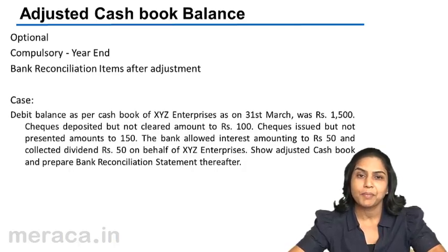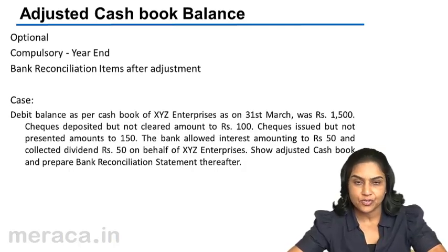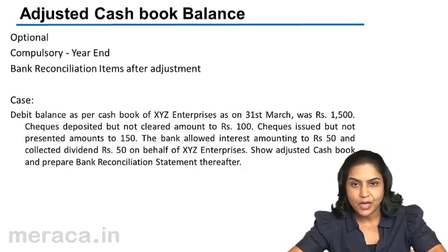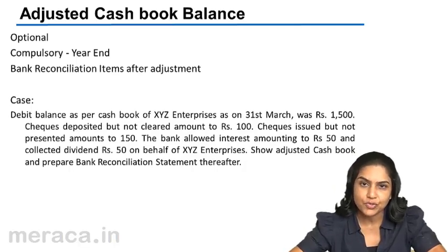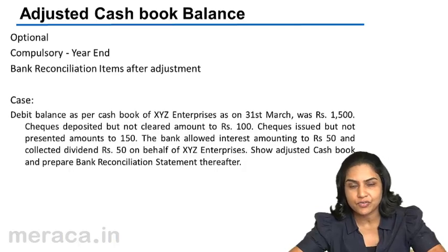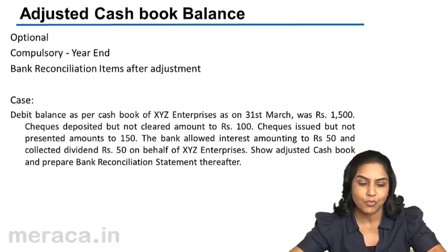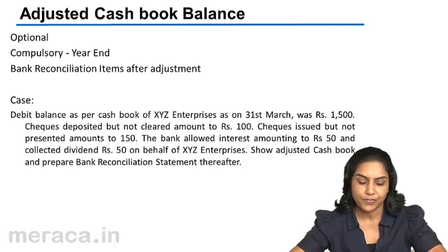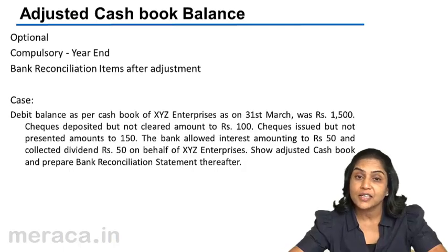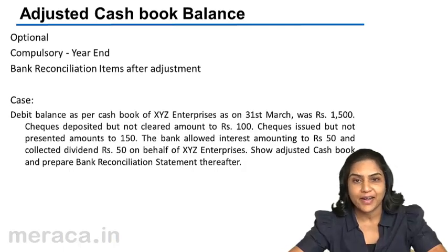What do we mean by errors? One area of errors could be because of certain mistakes — errors of posting, errors of casting, whatever it might be — in the cash book. These need to be rectified.